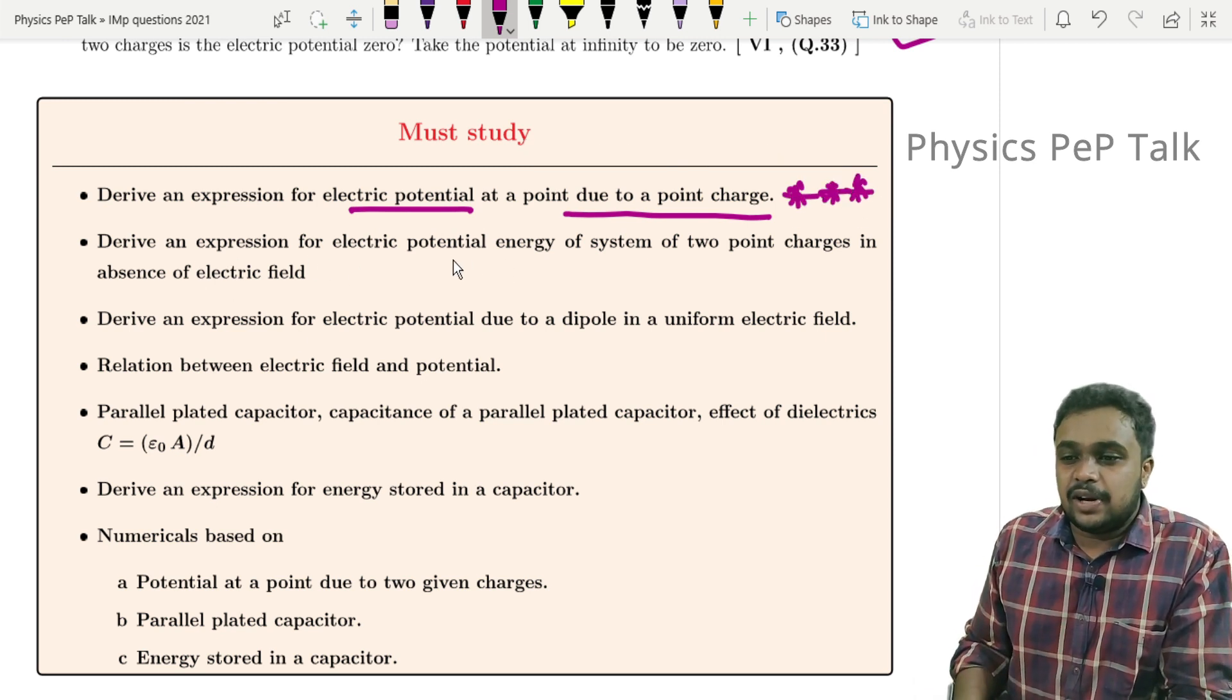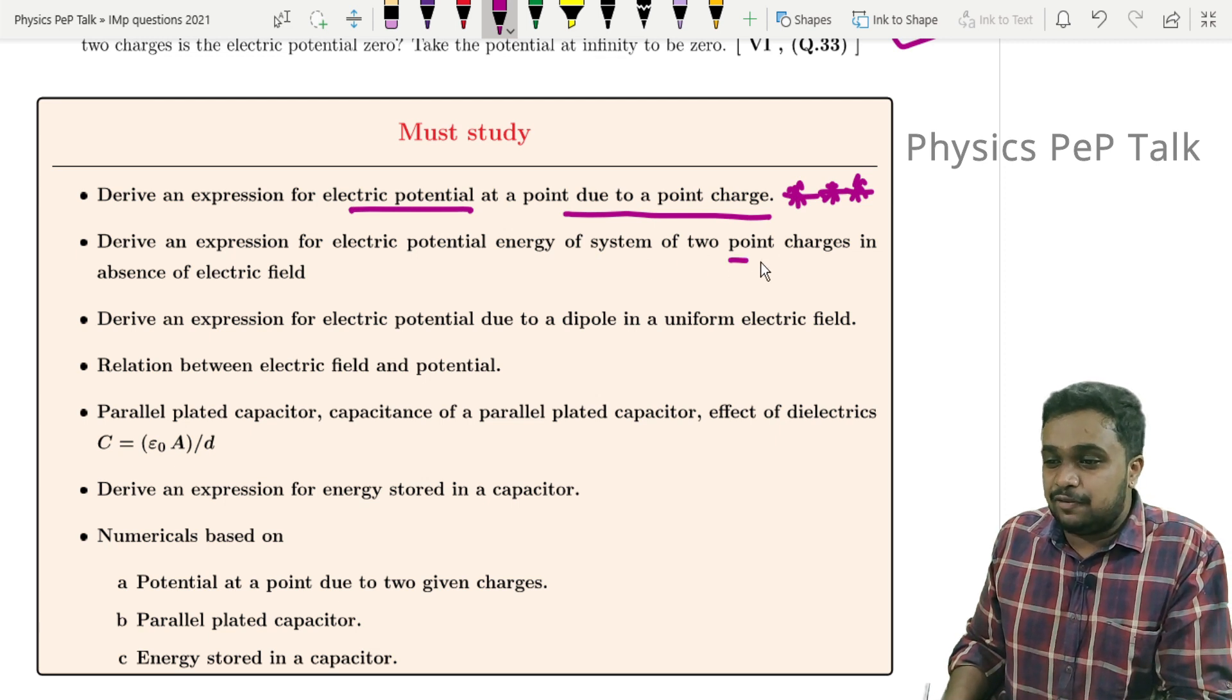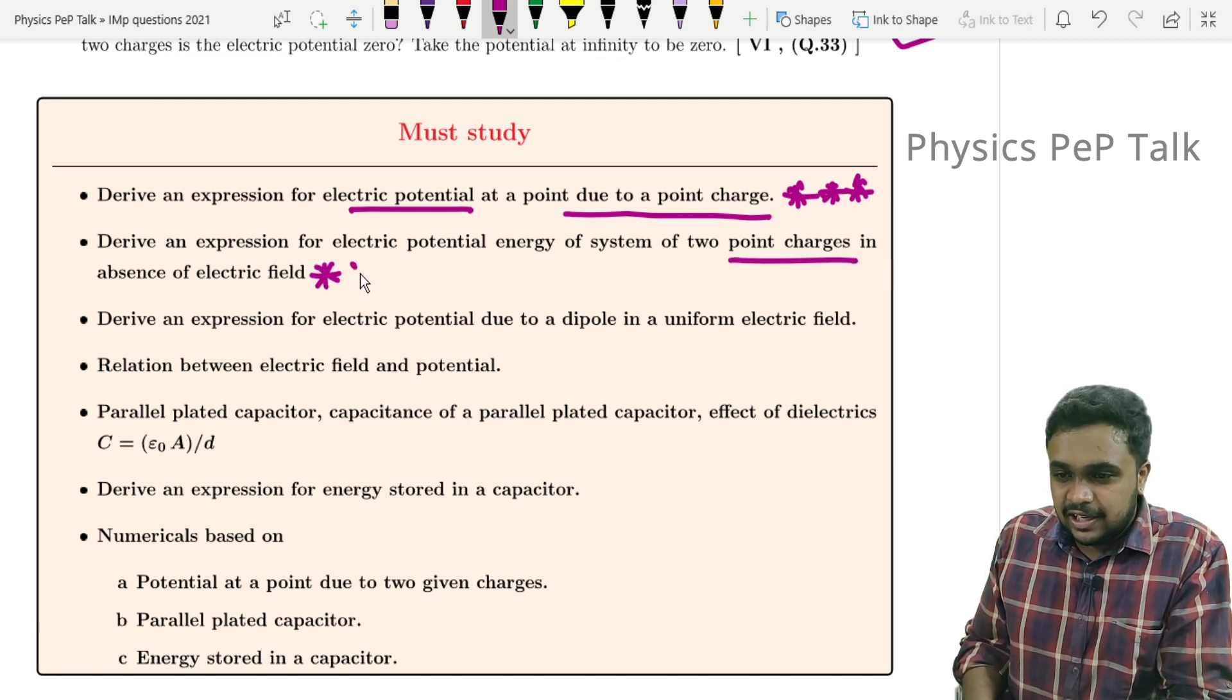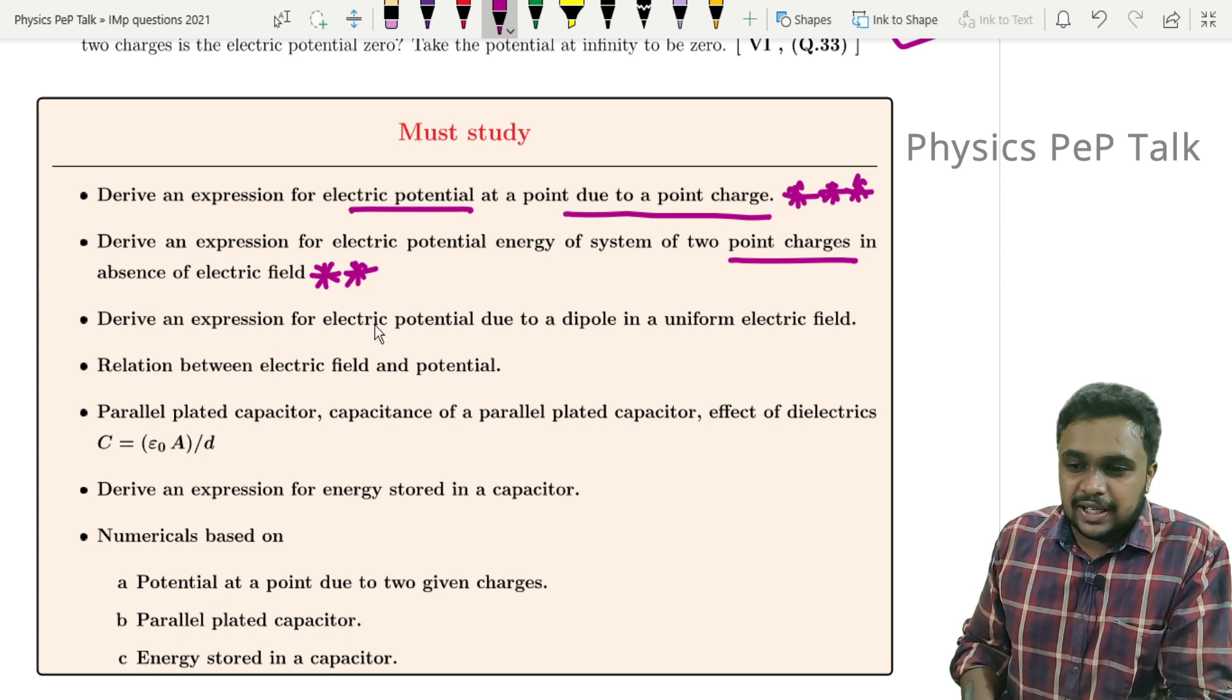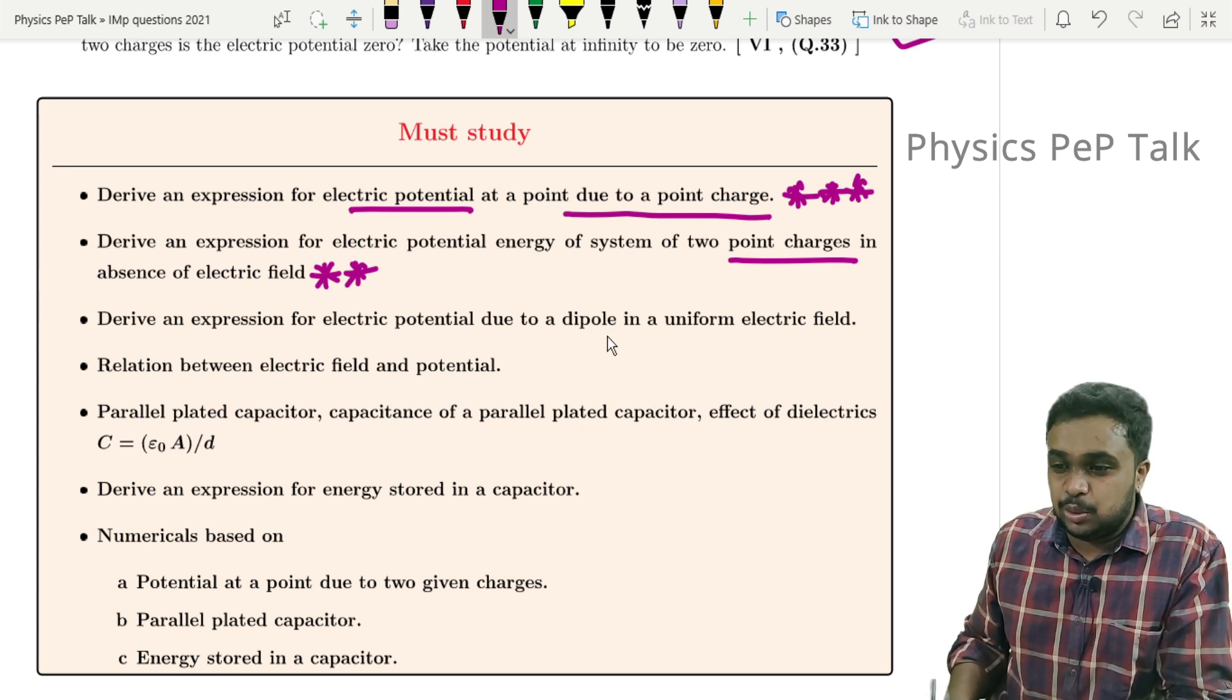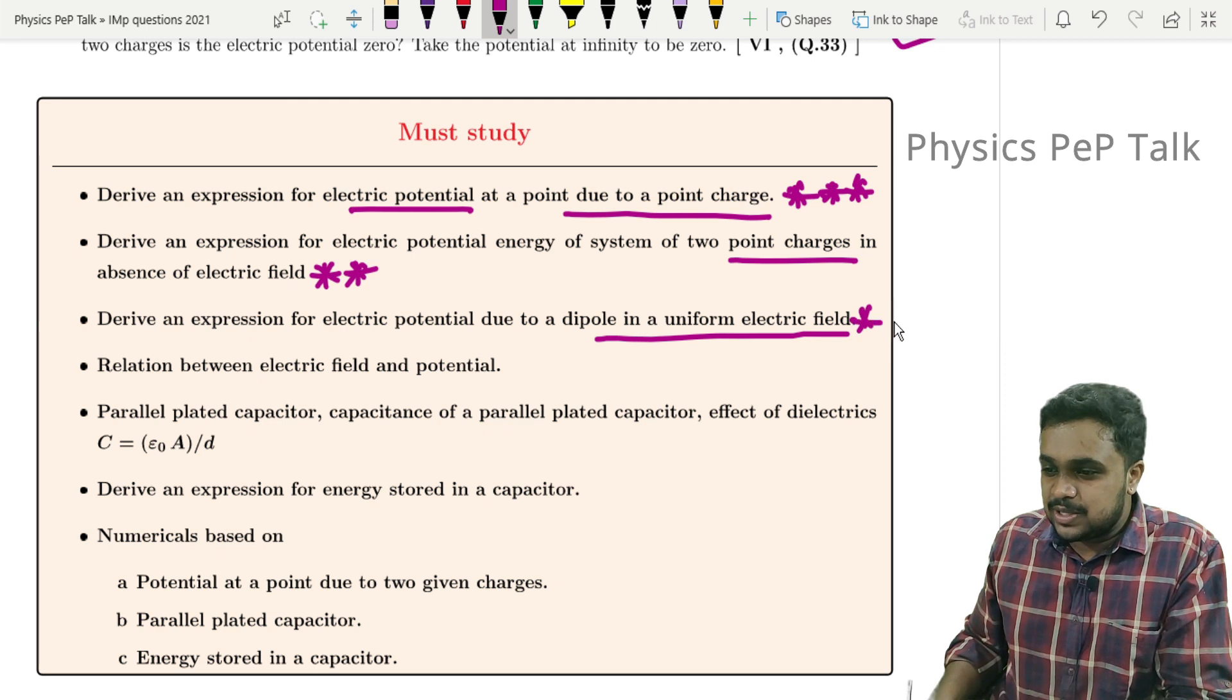Next, derive an expression for electric potential energy of a system of two point charges in absence of electric field. This was asked in 2019. Derive an expression for electric potential due to dipole in a uniform electric field - this was asked in 2018.